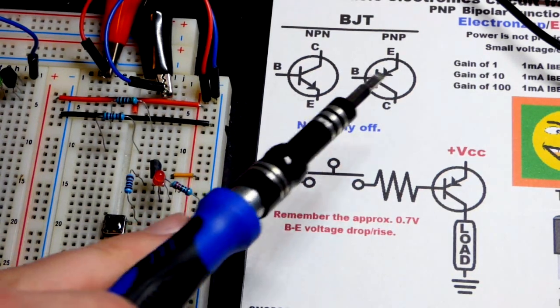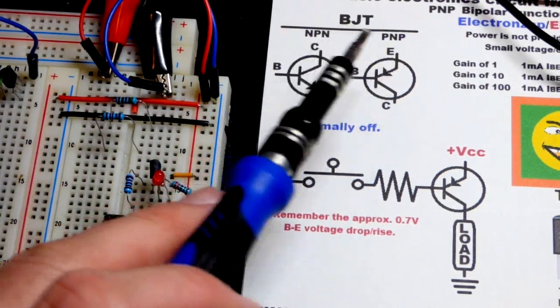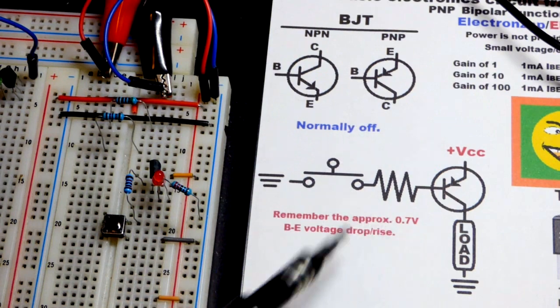In this video, we're going to look at the PNP Bipolar Junction Transistor wired as a switch.